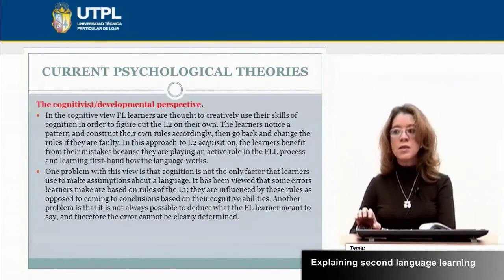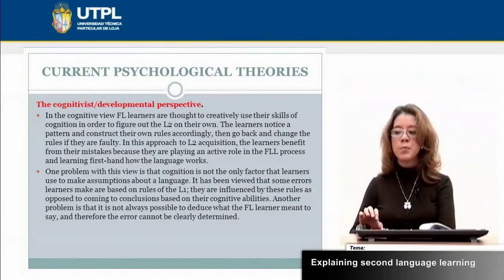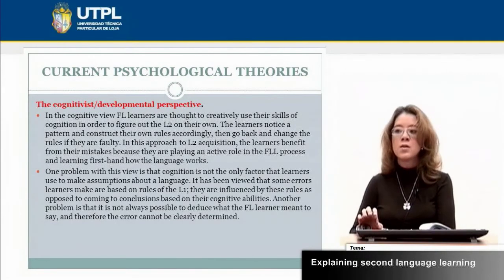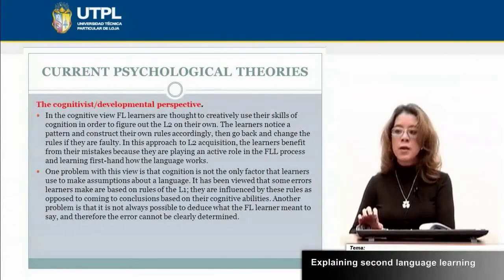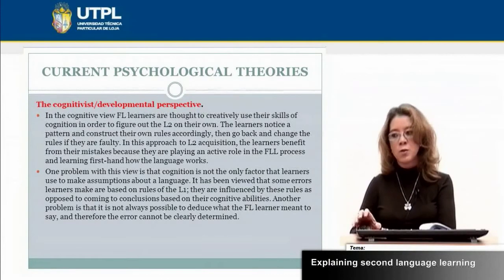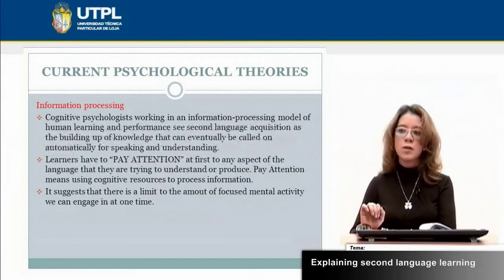As in first language acquisition, the cognitive perspective means that learners construct their own rules in order to learn the language. In the second language, this perspective has problems in identifying what the learner wants to learn — the learner doesn't always know what to learn — and that is why there are problems when using this perspective for second language acquisition.